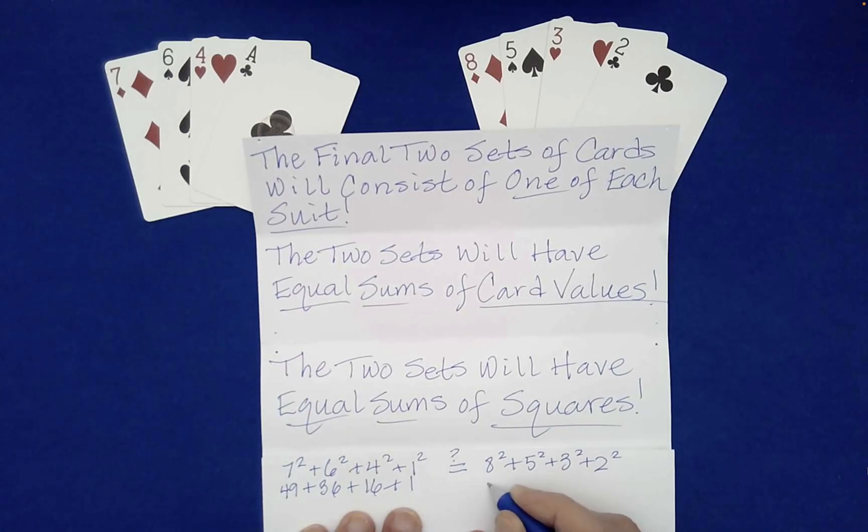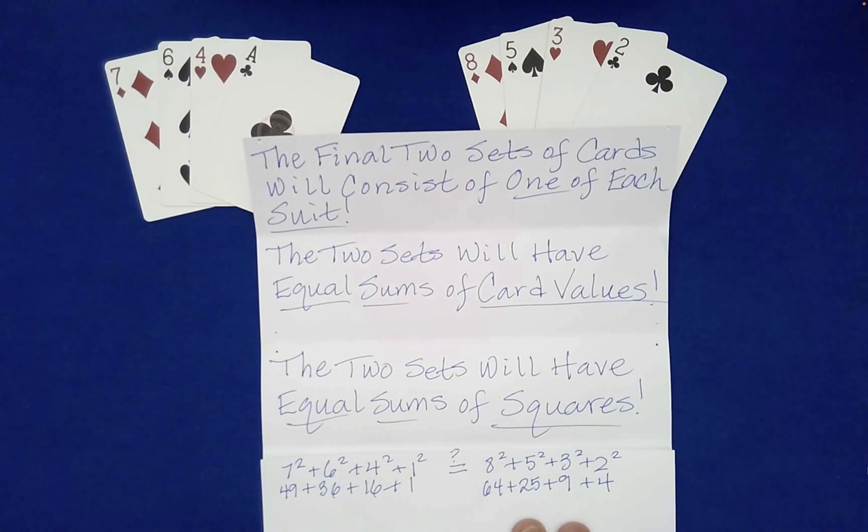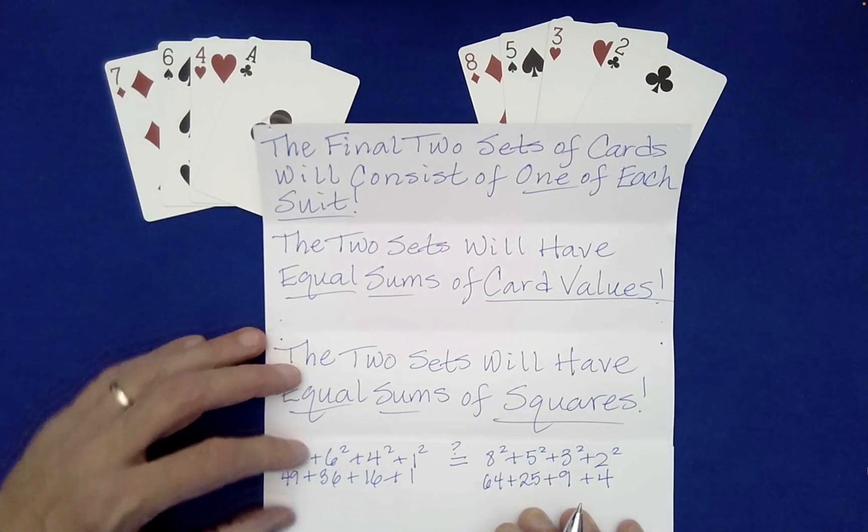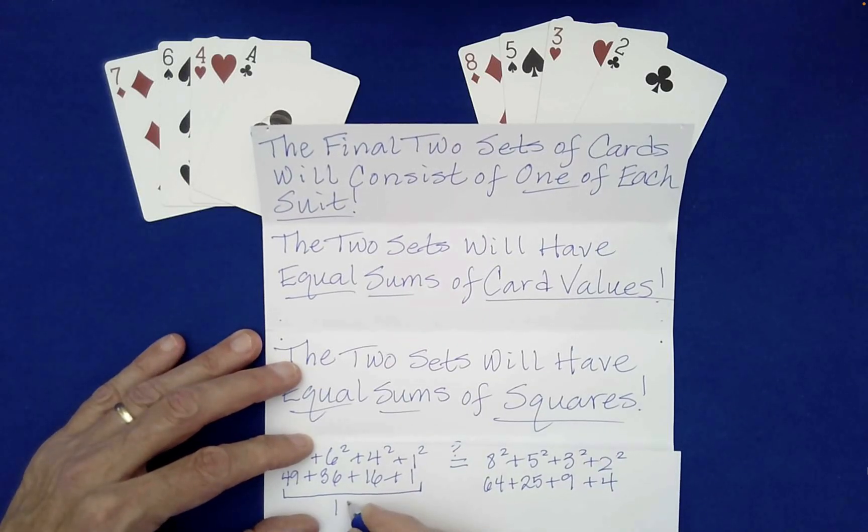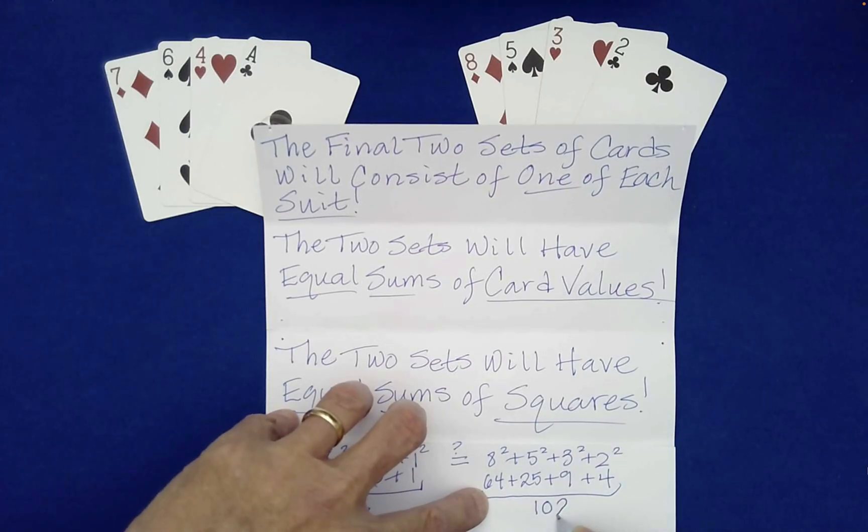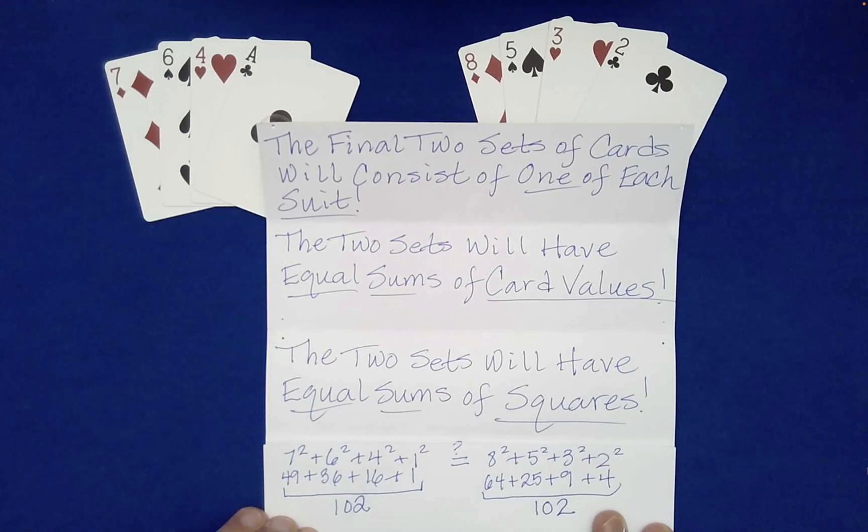This is a famous problem in number theory. And we're going to actually go beyond this in just a minute. So this is 49 plus 36 plus 16 plus one. Over here, we get 64 plus 25 plus nine plus four. Now, initially looking at these, there's really no reason to think that those four sets of numbers will add up to the same thing. Well, as you can check, they do indeed. Each of these sets of four cards add up to 102. So the sums of the squares are the same. It's 102.